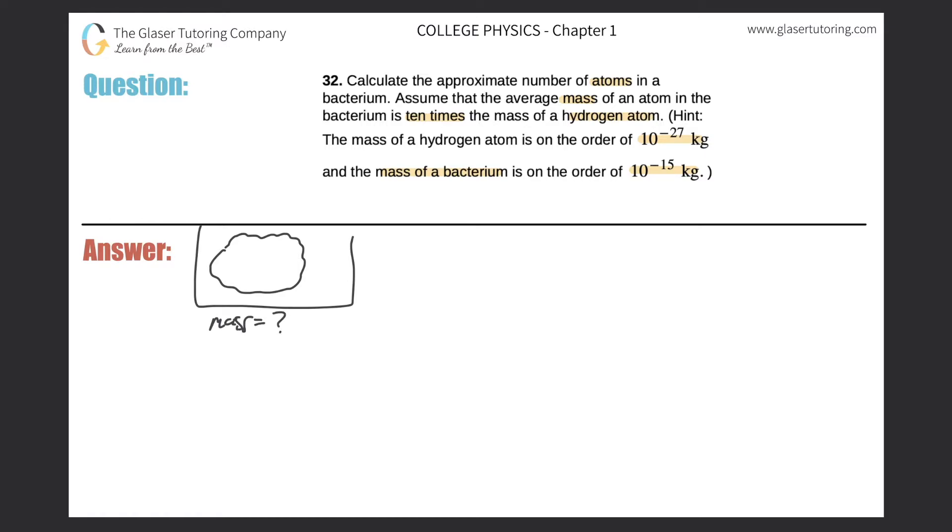Its mass will equal question mark. And it will also have a certain number of atoms within it. So let's draw these little circles. They'll all represent atoms. Now each atom has a mass. So all the atoms have a mass as well. So the mass of an atom, and the bacterium is, we don't know at the moment.